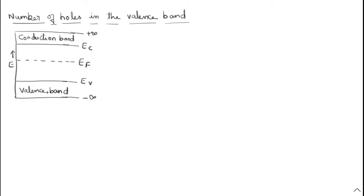Now we are concentrating on the valency band. Within this band, how many holes are present? When the electron moves to the conduction band, it leaves an empty site. That empty site is nothing but a hole. So if the electron moves, holes will be created. How many holes will be there in the valency band — that is what our discussion is today.